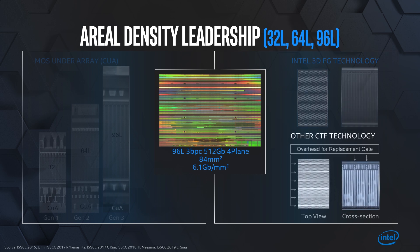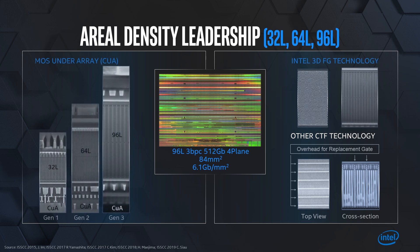At the bottom, what other charge flash technologies have to do is make breaks so that you can actually put the replacement gate material in. I've tried to normalize the scales on those two things, and you can see that there is a break in the memory holes, and as a result there is an overhead for the replacement gate, and that results in something close to 8% to 10% overhead for a cell size. That's significant.